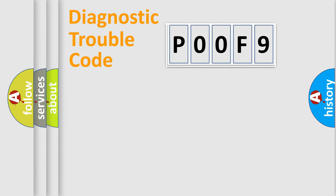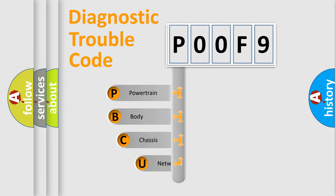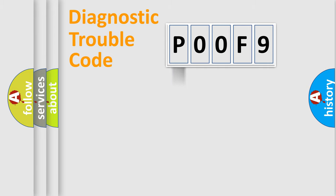Let's do this. First, let's look at the history of diagnostic fault code composition according to the OBD-II protocol, which is unified for all automakers since 2000. We divide the electrical system of an automobile into four basic units: Powertrain, Body, Chassis, and Network.